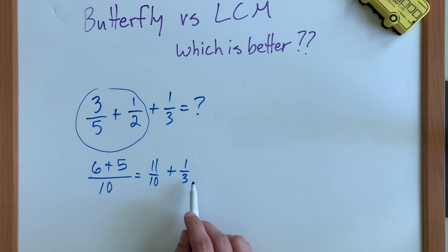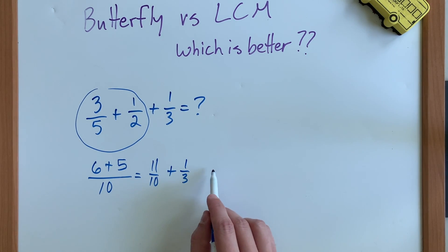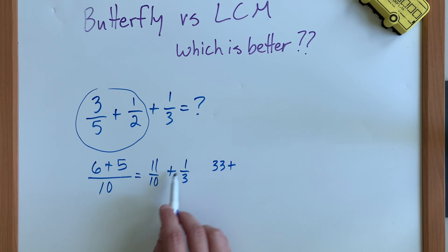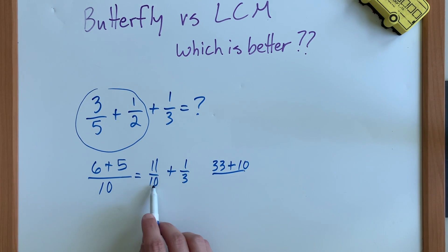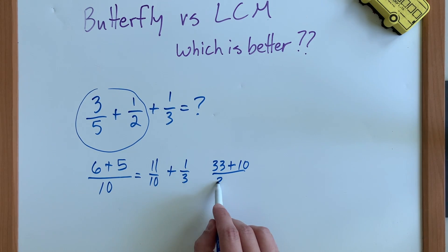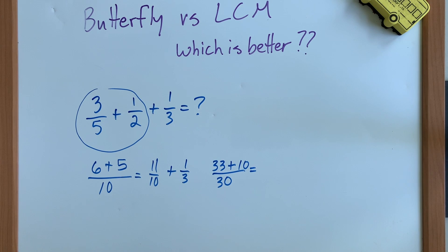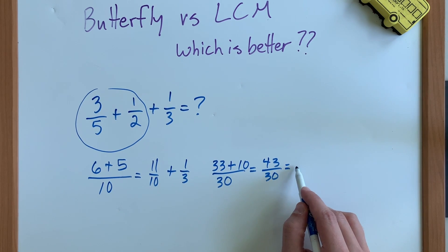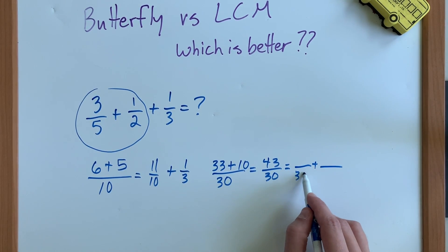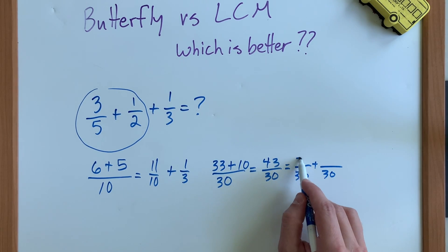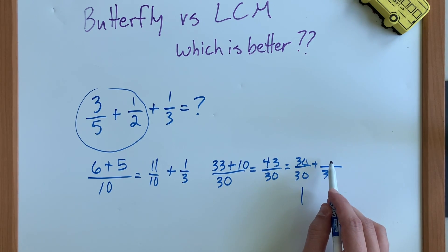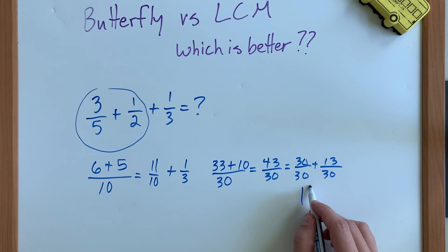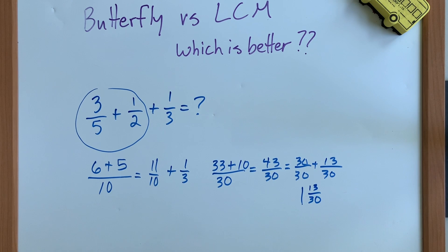Now we're going to do the butterfly method again with these two fractions. Eleven times three is thirty-three, and we're going to add ten times one, which is ten. All of that is divided by the product of the two denominators — ten times three is thirty. If I add those together, I get forty-three over thirty. To break that into a mixed number, I pull out thirty, which gives me one, and thirty plus thirteen is forty-three. So one and thirteen over thirty is my final answer.